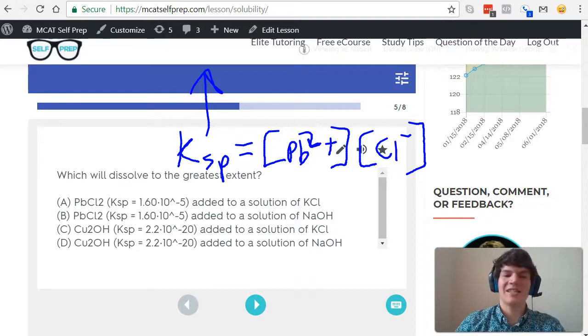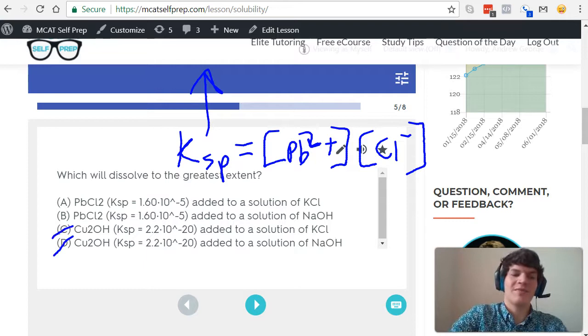So, which of these answer choices has the higher KSP value? It's going to be A and B. Let's eliminate C and D.